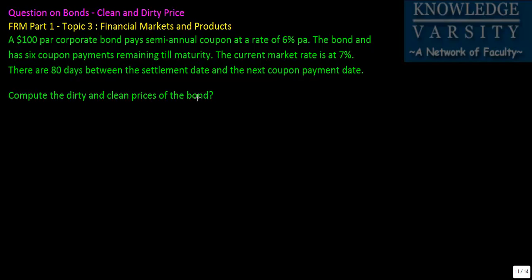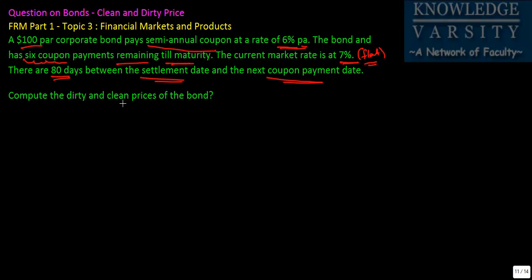Let us see the problem statement. There is a $100 par corporate bond paying semi-annual coupon and the coupon rate is 6% per annum. The bond has 6 coupon payments remaining. The current market rate is 7% and you have to assume that the yield curve is flat. There are 80 days between the settlement date and the next coupon payment date. You have to compute the dirty price and the clean price for the bond.